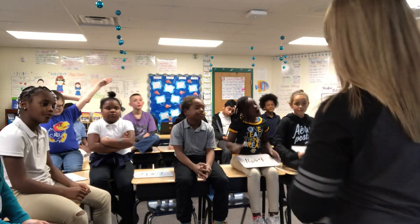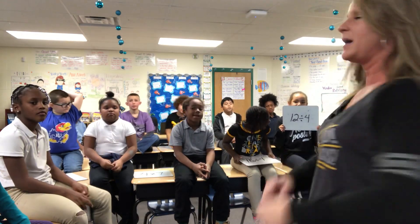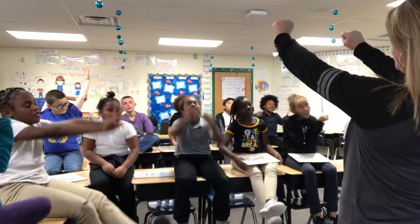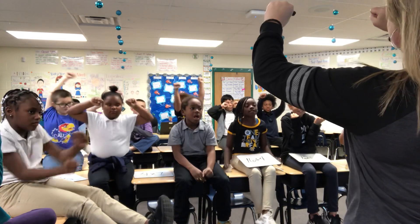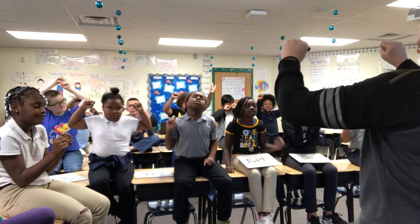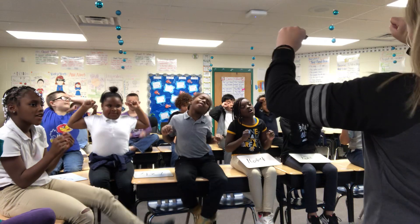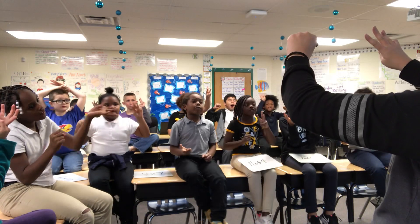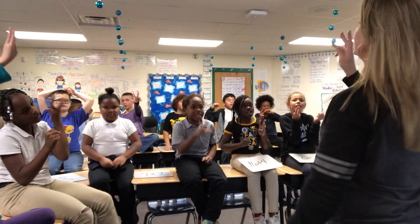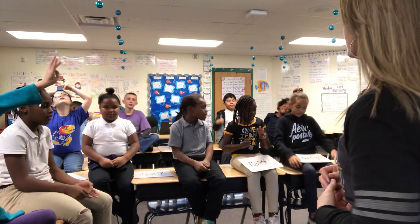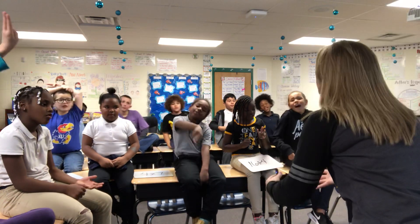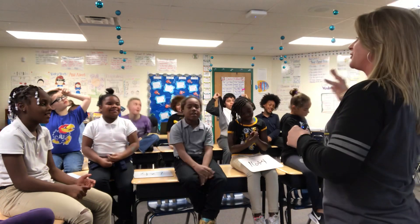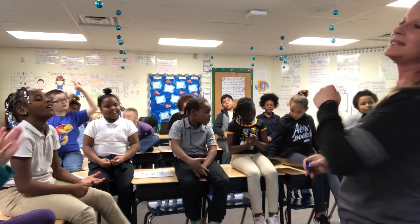Our next problem is 12 divided by 4. So do you hold up fists or fingers? Fingers! And you count by 4 until you get to 12! Ready, go! 4, 8, 12! How many fingers? 3! So 12 divided by 4 is — 12! No, 12 divided by 4 is 3! Because you had 3 fingers up at the very end.